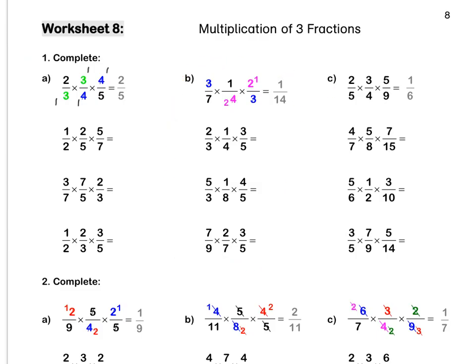Question C: we simplify by dividing our 5 and our 5. We can divide our 2 and our 4 by 2 to get 1 and 2. And lastly, we divide our 3 and our 9 by 3 to get 1 and 3. Then we multiply out to get 1 over 6. Press pause to answer question C by yourself.